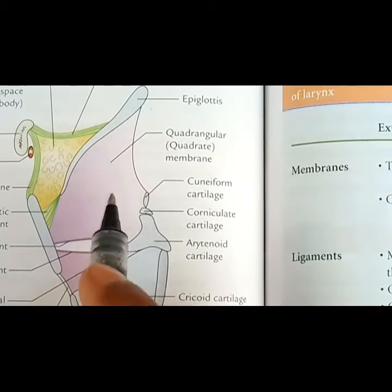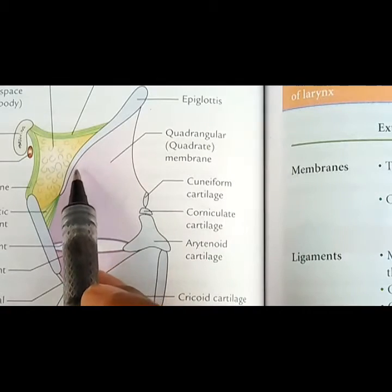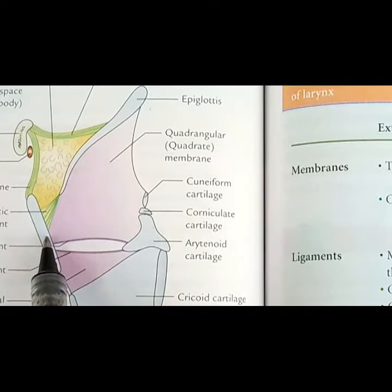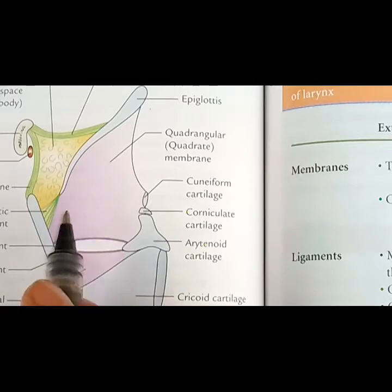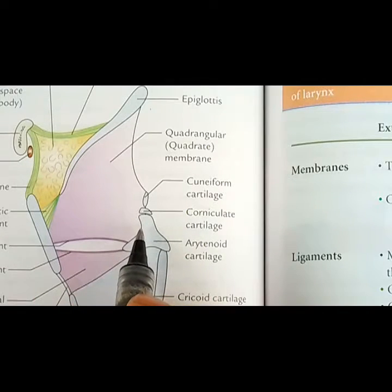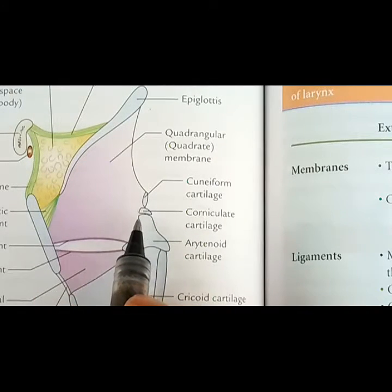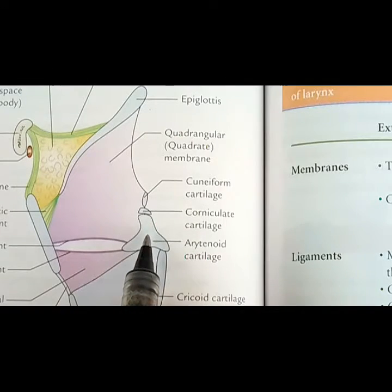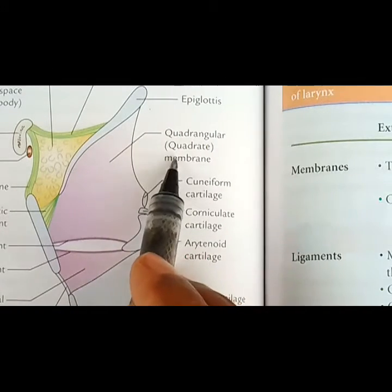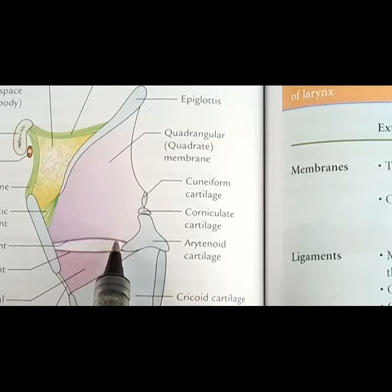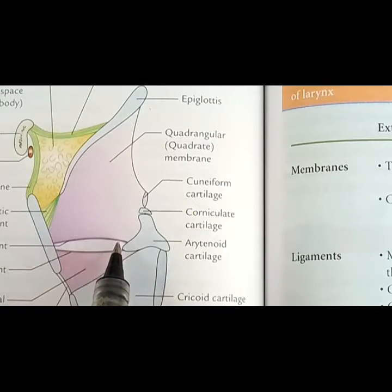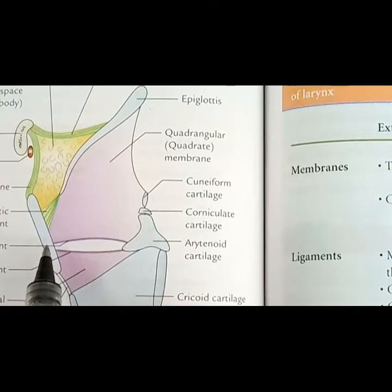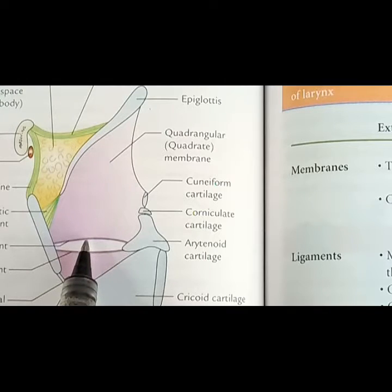The next structure is the quadrangular membrane, or quadrate ligament. It extends from the lateral surface of the epiglottis anteriorly to the posterior surface of the thyroid cartilage, and posteriorly to the anterior surface of the muscular process of the arytenoid cartilage. This quadrangular membrane has a lower free edge which is thickened to form the vestibular ligament, which is fibrous tissue covered by the mucous membrane of the larynx to form the vestibular fold.